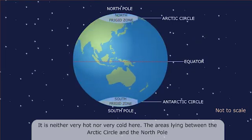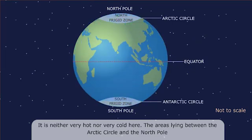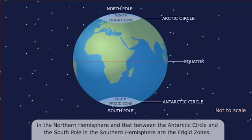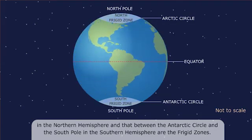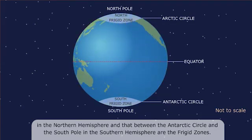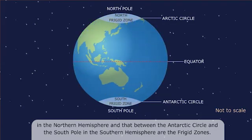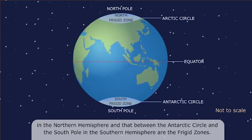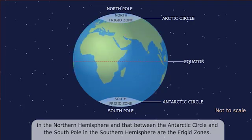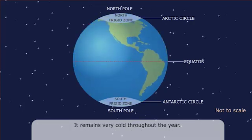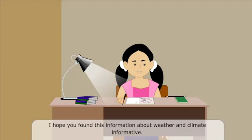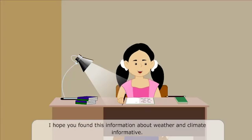The areas lying between the Arctic Circle and the North Pole in the Northern Hemisphere and that between the Antarctic Circle and the South Pole in the Southern Hemisphere are the frigid zone. It remains very cold throughout the year. I hope you found this information about weather and climate informative.